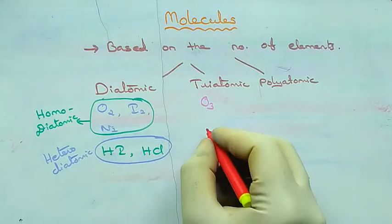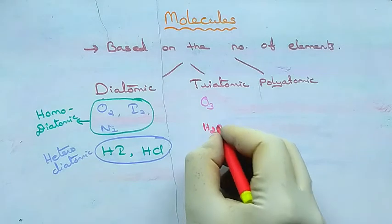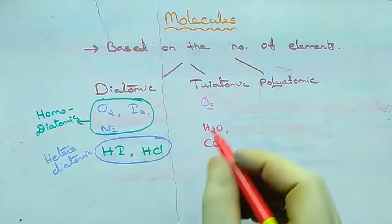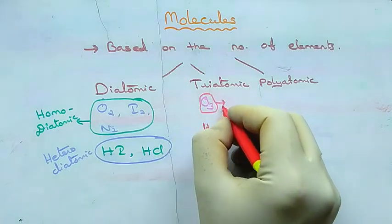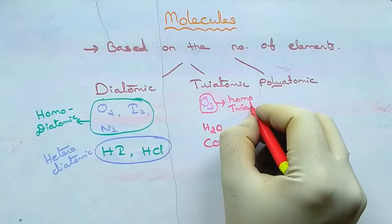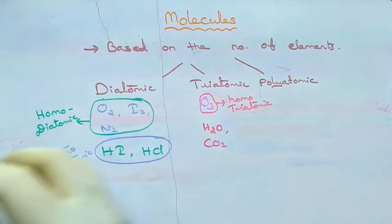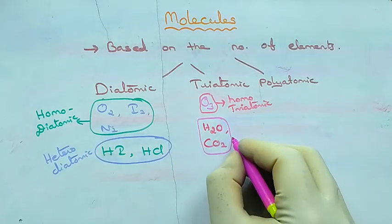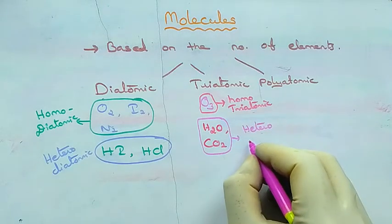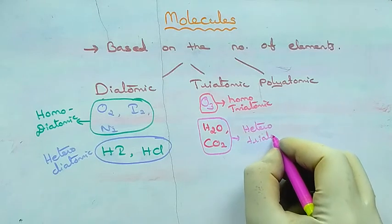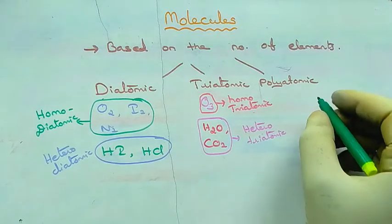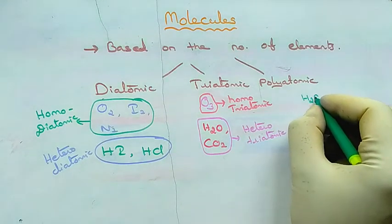For triatomic molecules: ozone (O3), H2O, and carbon dioxide (CO2) each contain only three atoms. Ozone is called homo-triatomic because there is only one type of element, while H2O and CO2 are hetero-triatomic because they contain different types of elements with only three atoms total.